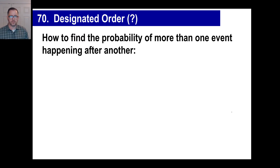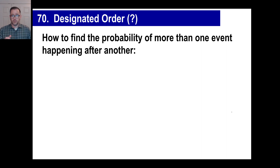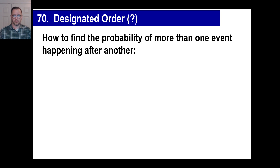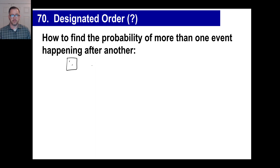Let's look at another type of probability problem called designated order — what are the odds you're going to do something first that matches a condition, and then something else that matches another condition. The way you handle this is you multiply the individual probabilities together.